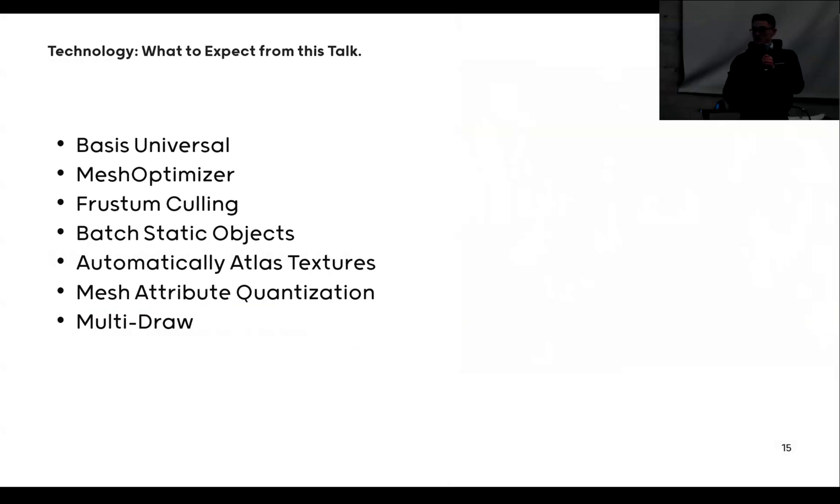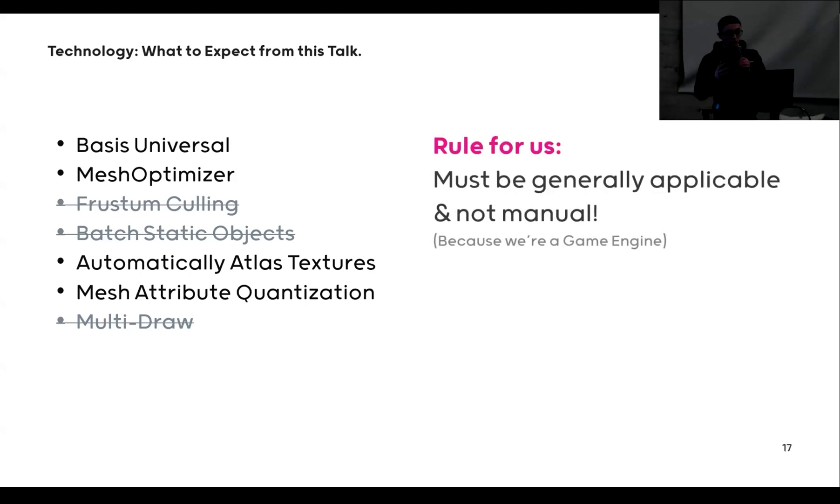To give you an idea of where the talk starts, this is kind of a suggestion of what I say you definitely do always. But I'm not going to talk about any of these, and we're not even doing all of these, because for example frustum culling, static batching, and multi-draw don't really work for us. We found other things that are faster, and it needs to be generally applicable and automated. So we don't want people of the game engine having to do all of these optimizations manually.